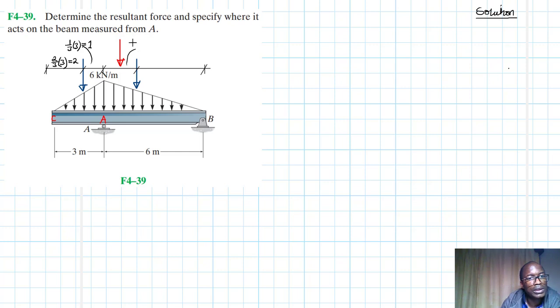And then this will just be one-third of six, this is equal to two, and this is two-thirds of six, this is equal to four.